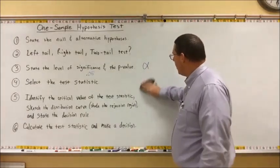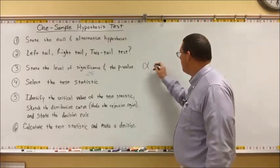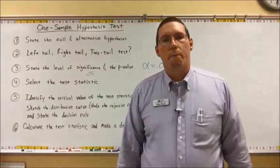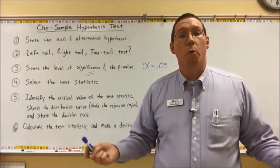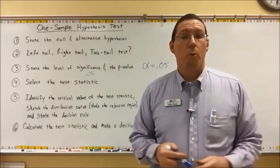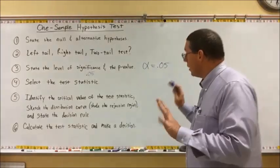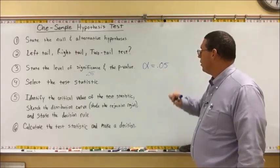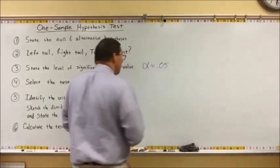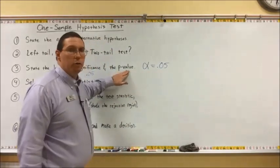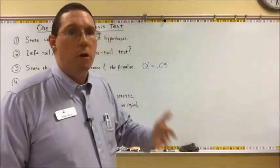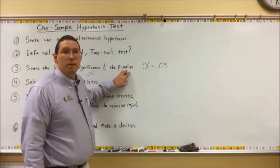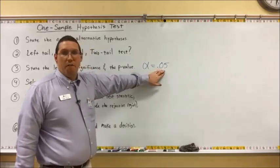We often use alpha equals 0.05, but we can also use 0.02 or 0.01, or in certain industries 0.10 or 0.15 — it depends on the field. You would write: alpha equals 0.05. This alpha value is going to indicate the p-value that you'll look for in the t-table or z-table. The p-value is associated with alpha, and I'm going to show you how.